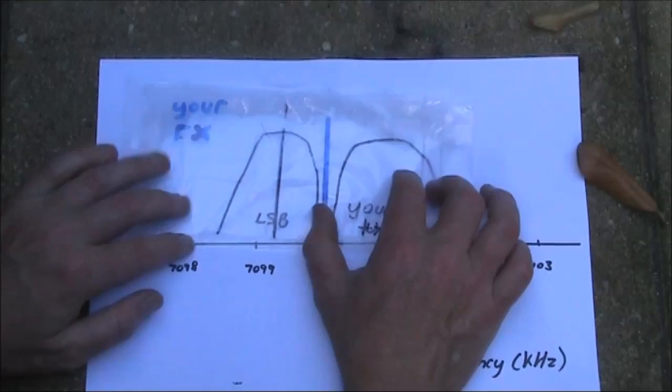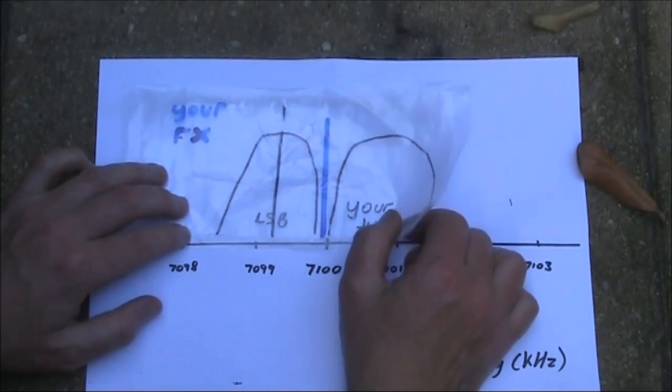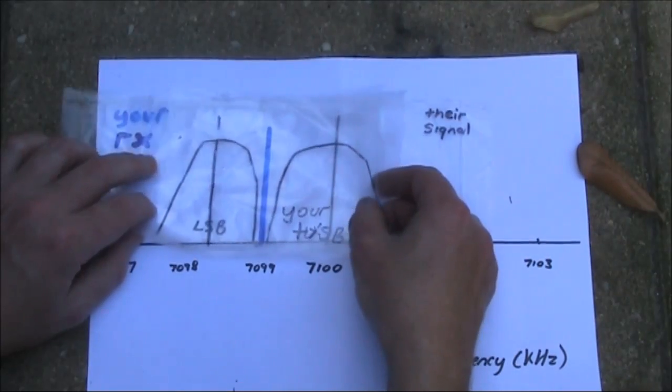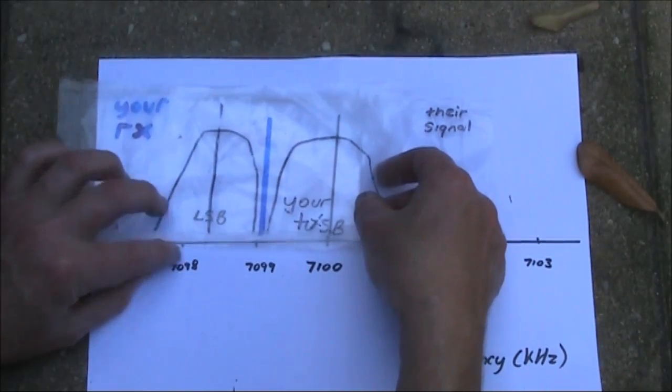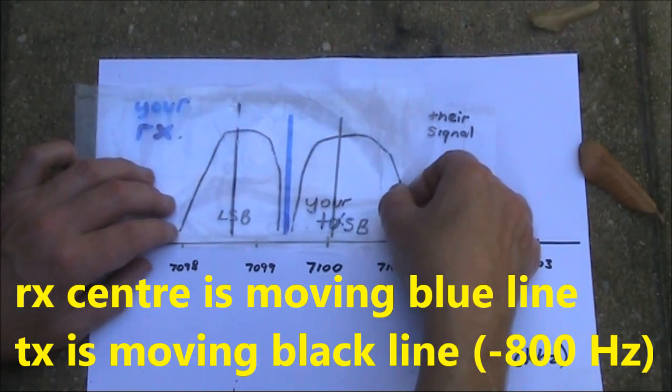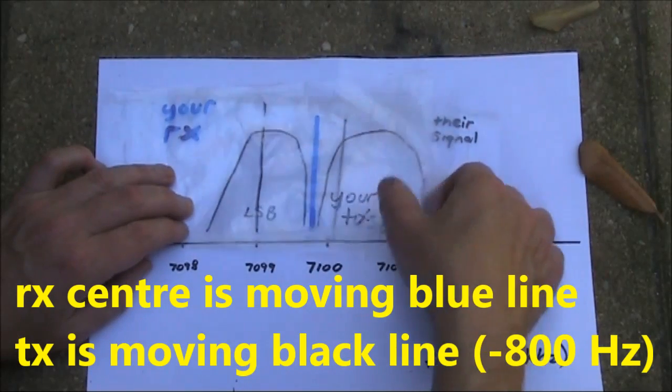The other thing you can do is to have a fixed offset of around 800 Hz, depending on the pitch of signals you like. And then as you tune across their signal, which is on 7100, you'll hear their signal, then as you tune up in frequency, it will go low towards the carrier.